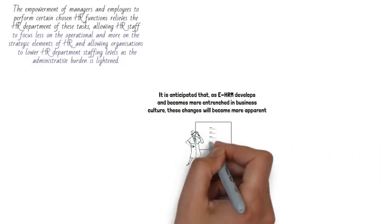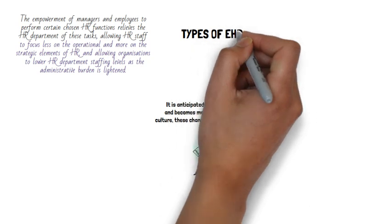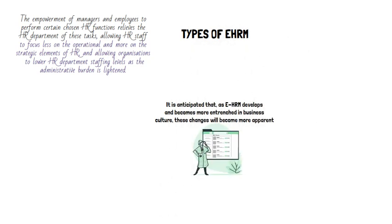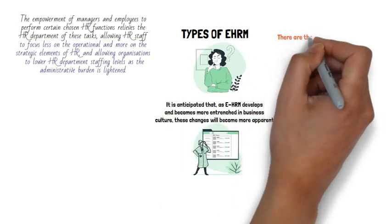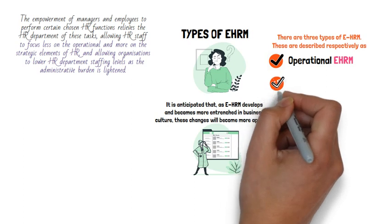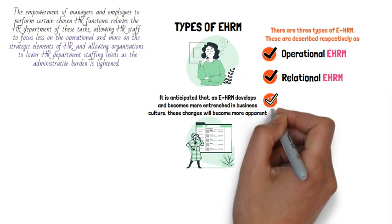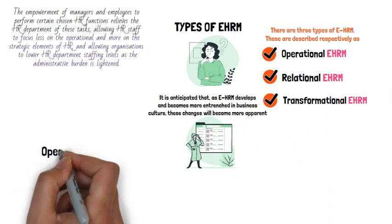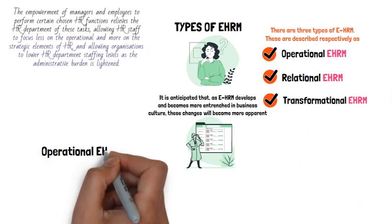There are three types of EHRM. These are described respectively as operational, relational, and transformational.